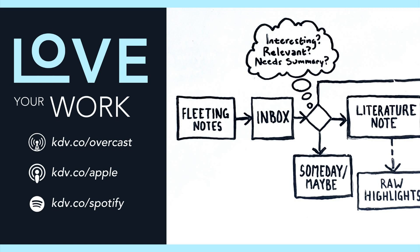The inbox is where I put notes that need to be processed — this could be highlights from a book that need to be condensed and summarized, or a link to an article I may want to summarize. If I don't want to deal with something in my inbox, I put it in my Someday Maybe folder, borrowed from GTD. Raw is where I store exported highlights after I've condensed and summarized a book or article — it keeps me from cluttering the system but I can still search for details not covered in my literature notes.